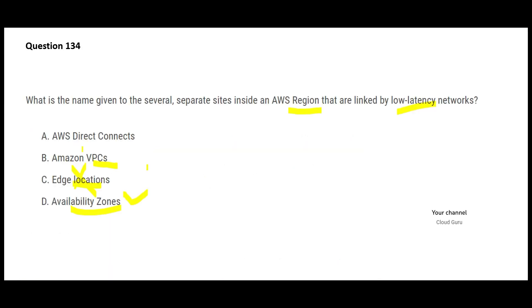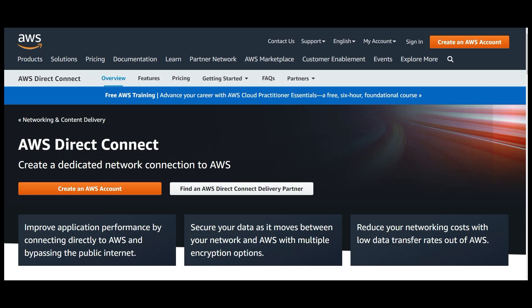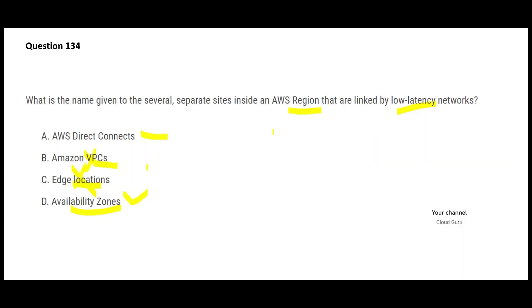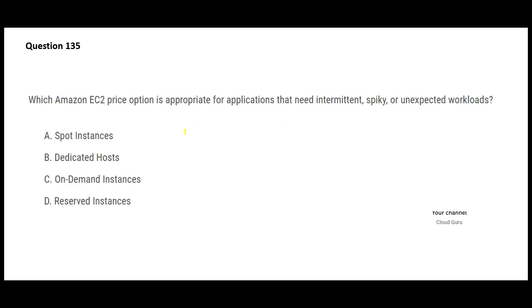Direct Connect, option A — if you want to connect your on-premises infrastructure to AWS and want a dedicated network connection, you use Direct Connect. If you have a hybrid cloud model, you use this. It is not part of a region; it is part of an availability zone. So D — availability zones — is my final answer.